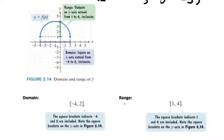Now looking at the range, the y-coordinates range from 1 up to 4. We can assume that the circle is hitting 4, so 4 is included in the range, as well as 1 — because these are solid circles. So the range is: square bracket, 1, comma, 4, square bracket.